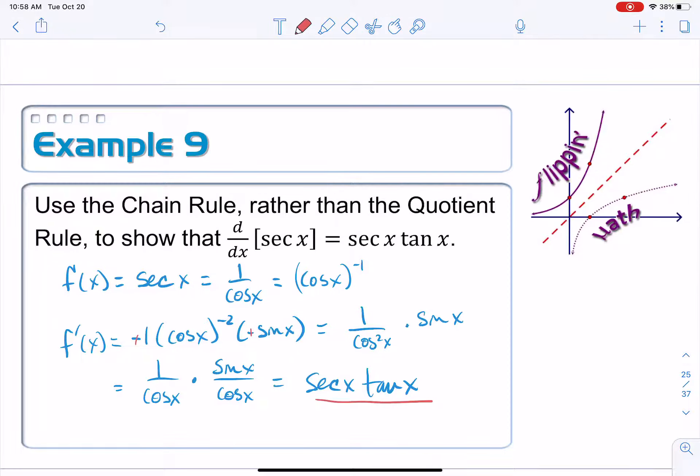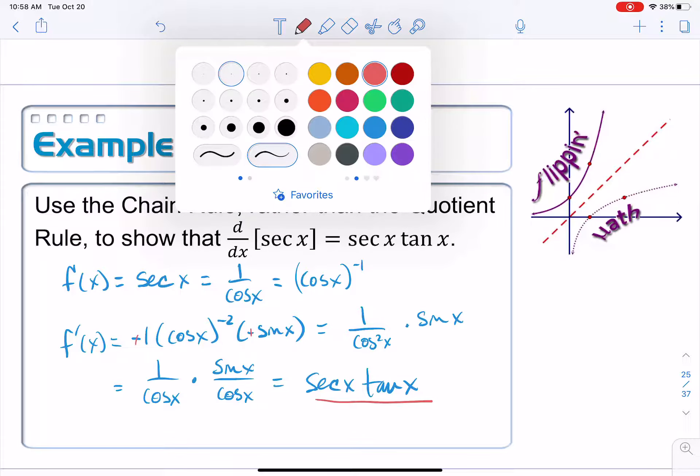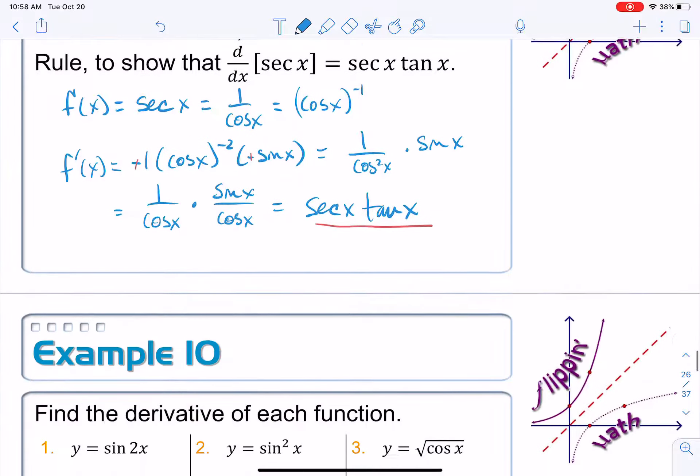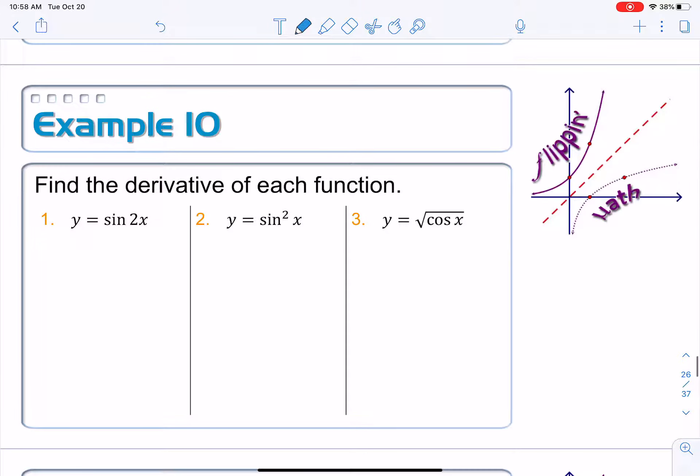Just in case the quotient rule didn't work out for you, now maybe the chain rule will. Let's look at example 10 where we have derivatives of some more trig functions.